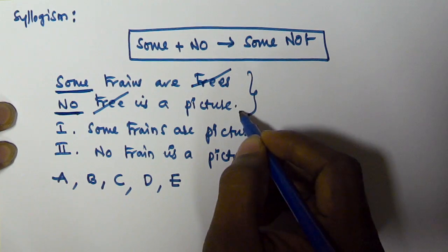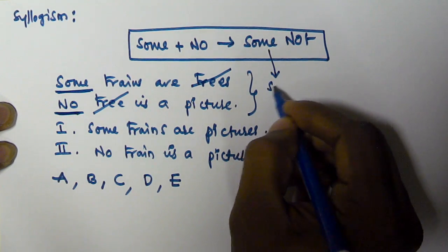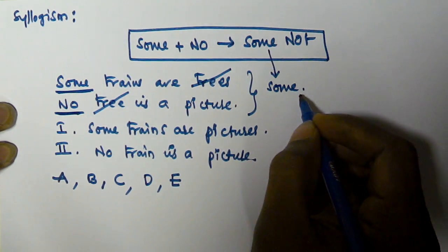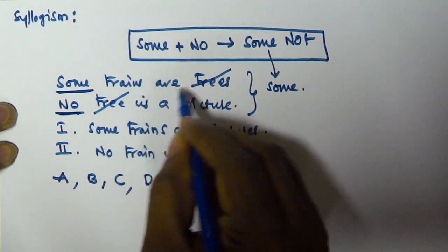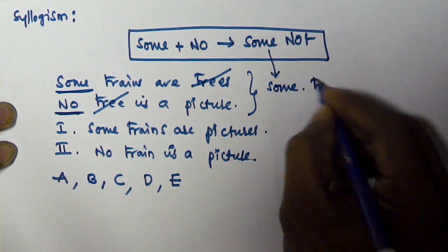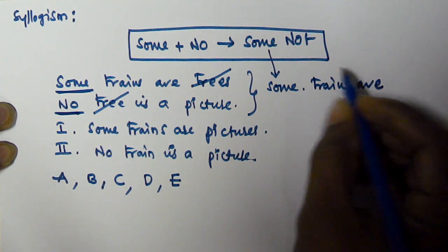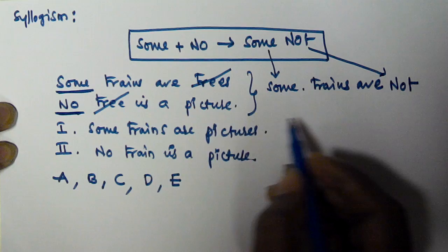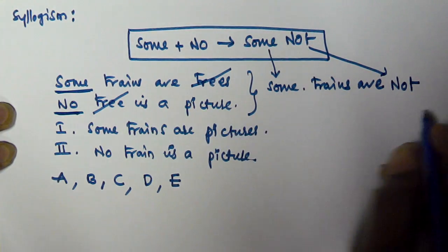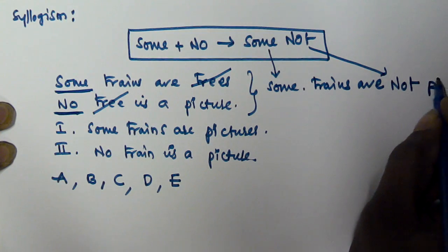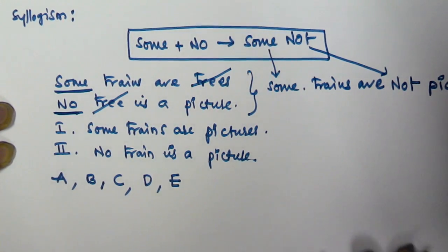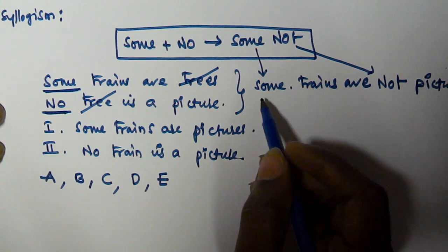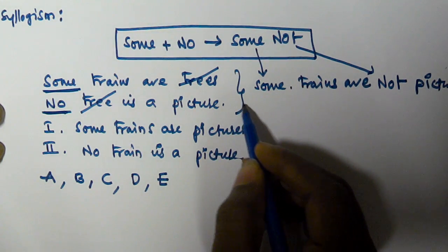From the two given syllogisms, using the rule 'sum plus no equals sum not,' the conclusion starts with 'some.' We take the subject from the first syllogism — 'some trains are' — then use 'not,' and then take the predicate from the second syllogism, which is 'picture.' So we derive: 'Some trains are not pictures.'